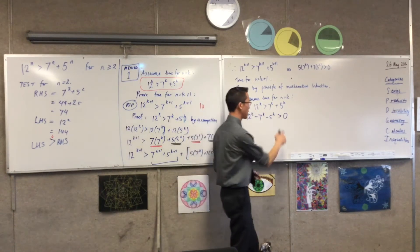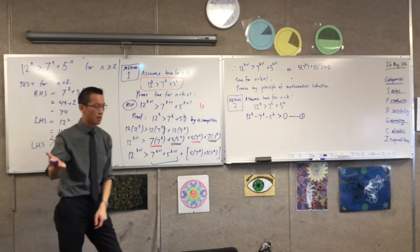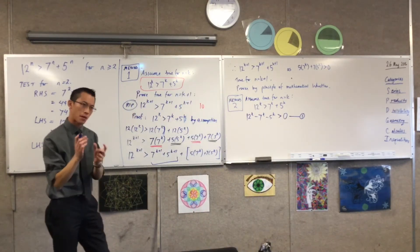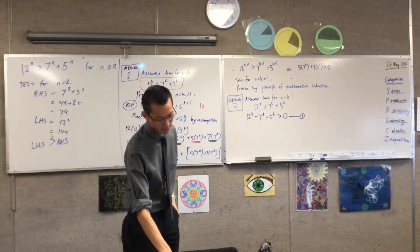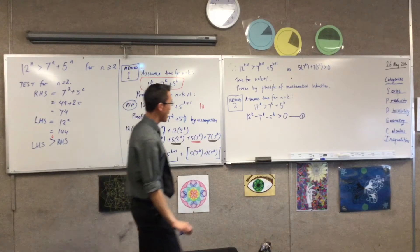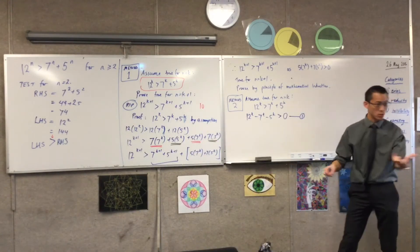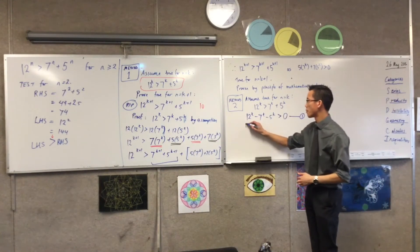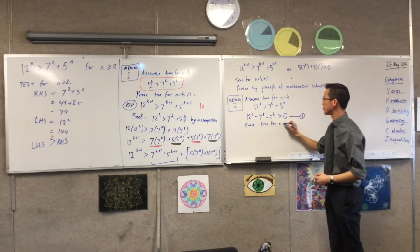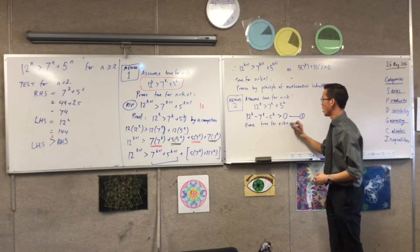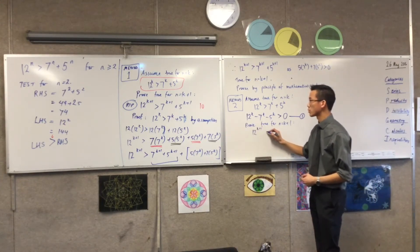So here's my assumption. Because this has actually changed — I assumed something and then mucked about with it — I'm going to give it a label. Right, so now I return back to what I'm trying to do, which is my k plus one case. I'm going to prove true for n equals k plus one — let's write that out: 12 to the k plus one.